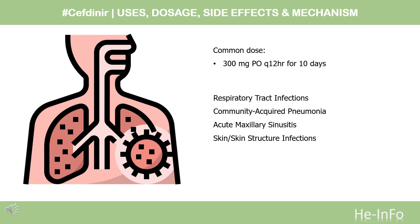Acute maxillary sinusitis caused by H. influenzae including beta-lactamase-producing strains, S. pneumoniae penicillin-susceptible strains only, or M. catarrhalis including beta-lactamase-producing strains: 300 mg PO Q12HR or 600 mg PO Q24HR for 10 days. Skin and skin structure infections — uncomplicated infections caused by Staphylococcus aureus including beta-lactamase-producing strains, or S. pyogenes: 300 mg PO Q12HR for 10 days.